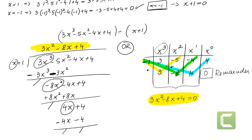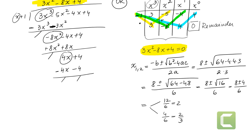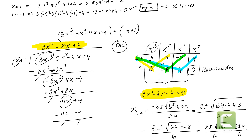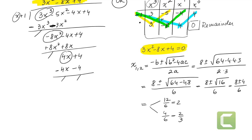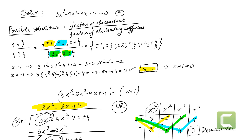Our equation was initially third order, and we've narrowed it down to a second-order equation, 3x squared minus 8x plus 4 equals 0, which we can solve using the quadratic formula. Substituting a, b, and c, we get x equals 2/3 and x equals 2. So all solutions to 3x cubed minus 5x squared minus 4x plus 4 are x equals negative 1, x equals 2/3, and x equals 2.